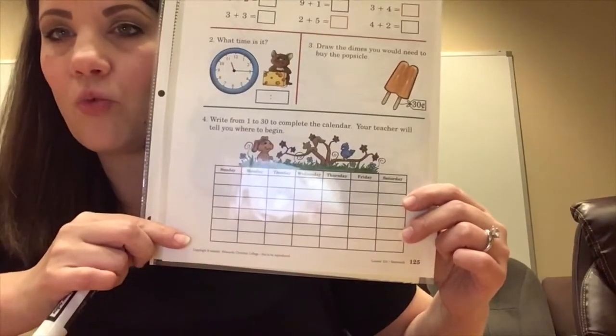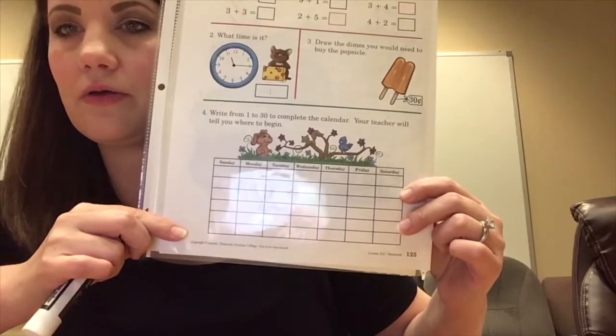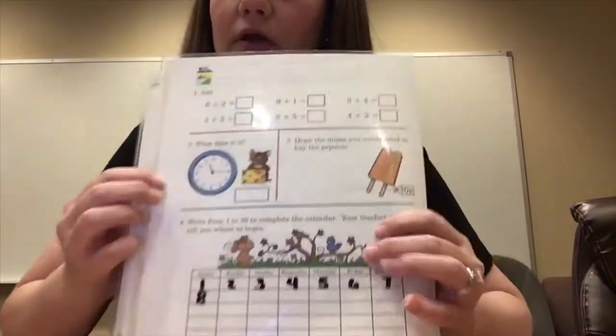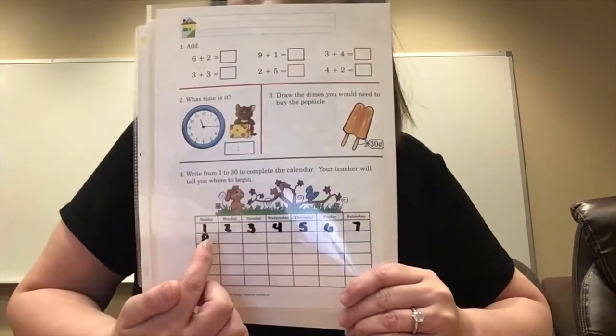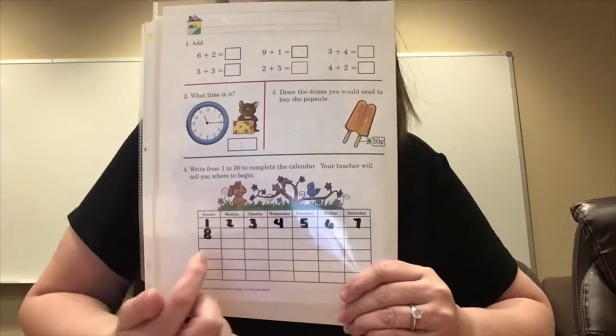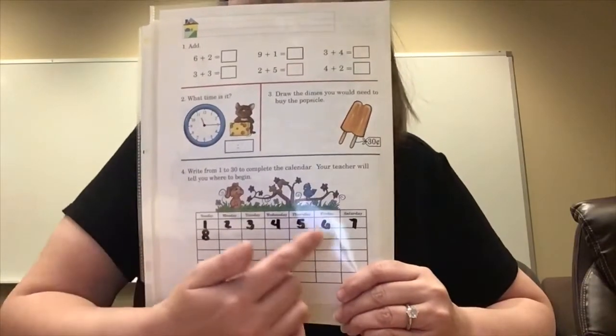At the bottom it says write from 1 to 30 and complete the calendar — your teacher will tell you where to begin. We're going to start on Sunday. I just want to see if you can write your numbers to 30. You'll go across this way: 1, 2, 3, 4, 5, 6, 7, 8, keep going 9 through 14, then skip to the next row: 15 through 20, and keep going all the way to 30. I'm checking two things: can you count to 30 without missing numbers, and do you know how to write them? If you need help, use your numbers chart.